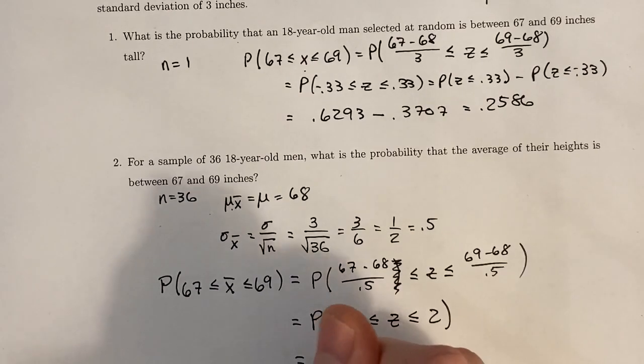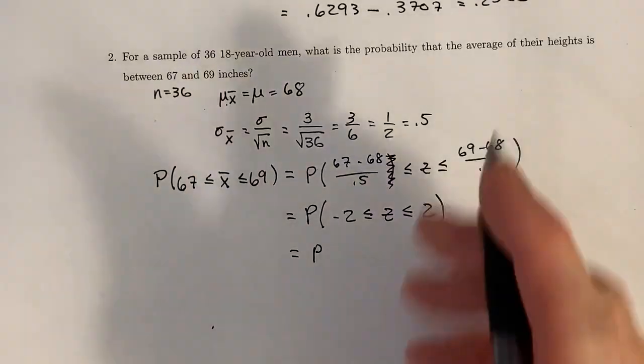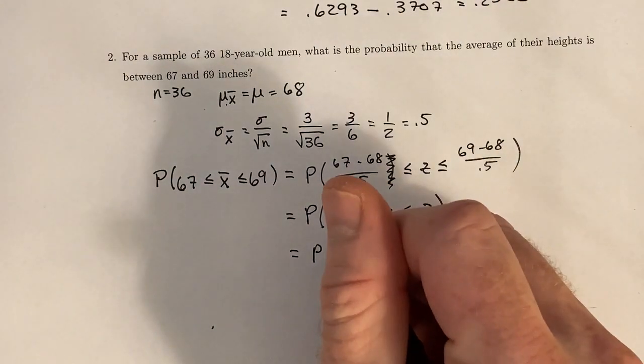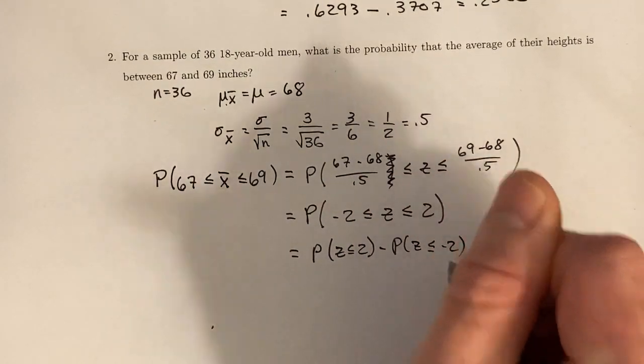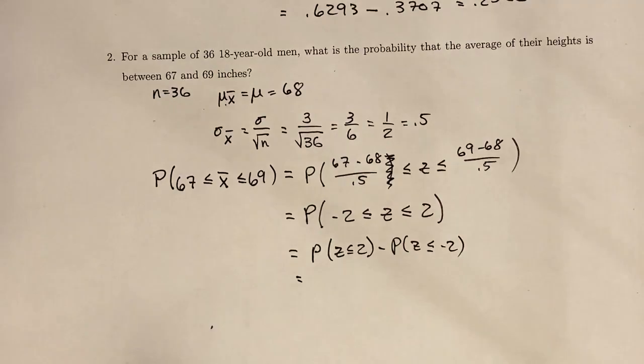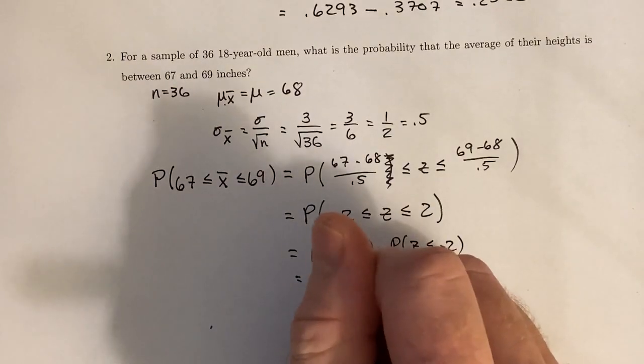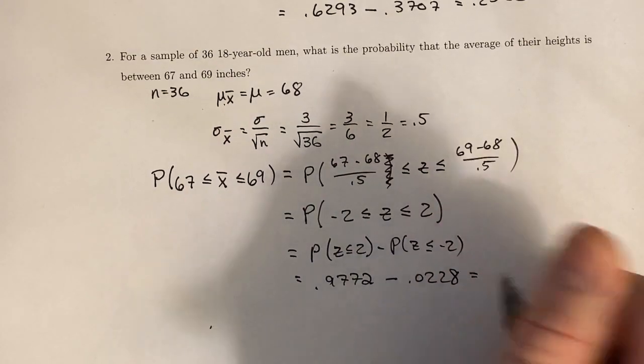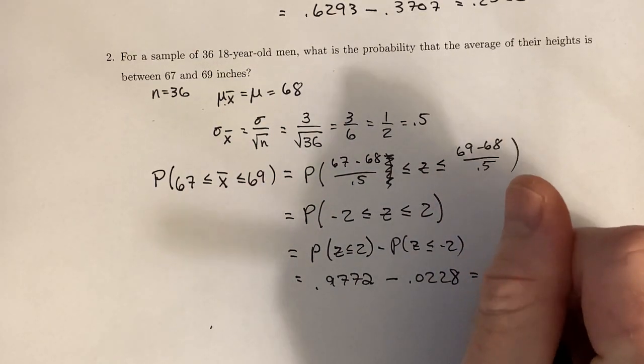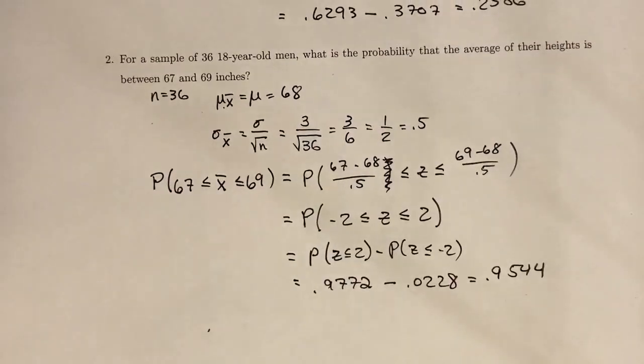Right. So again, that's going to be the probability of z less than or equal to 2 minus the probability of z less than or equal to negative 2, which gives us 0.9772 minus 0.0228, which gives us 0.9544.